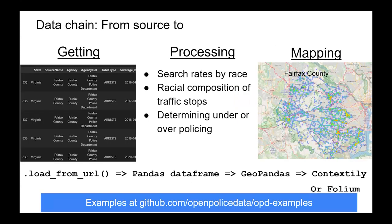The basic data chain is a three-step process. First, getting the data — typically using a single load-from-URL command that obtains data directly from the community-provided source without caching. Second, processing, done by the researcher or advocate to answer their specific research question. Third, OpenStreetMaps is very handy for mapping the data to help people understand the results of the analysis.